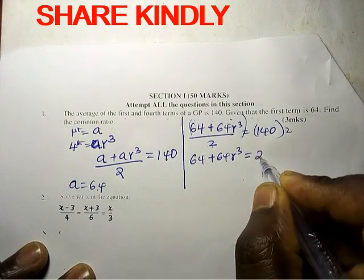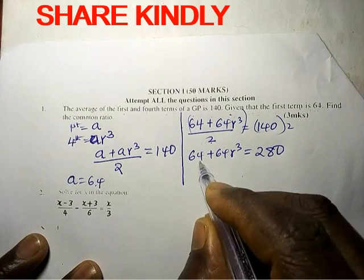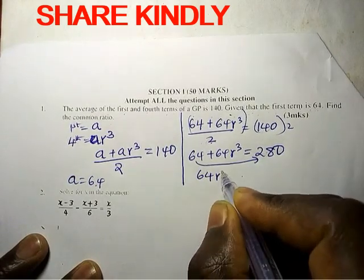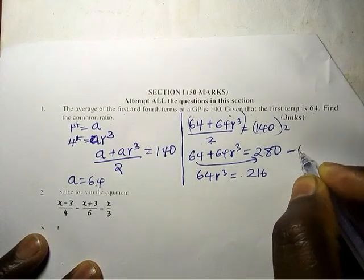Like terms together, this one will go to the other side as subtraction. So 64 r cubed is equal to 216 when we subtract 64 here.